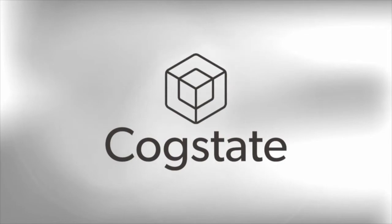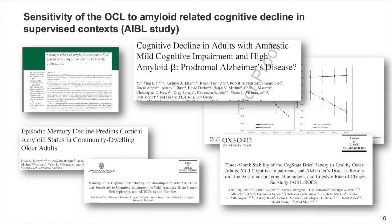The one card learning test has shown excellent validity, reliability, and sensitivity to change across multiple contexts of use, making it a highly useful outcome measure for clinical trials. For example, this test has shown sensitivity to cognitive decline and impairment across the spectrum of Alzheimer's disease, including in amyloid positive cognitively normal individuals, or preclinical Alzheimer's disease.